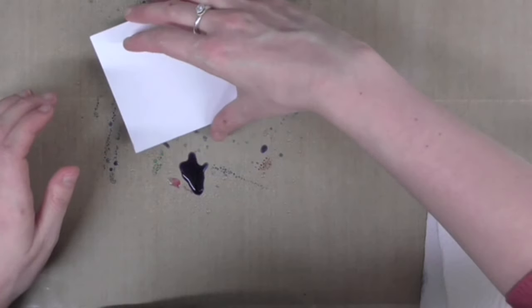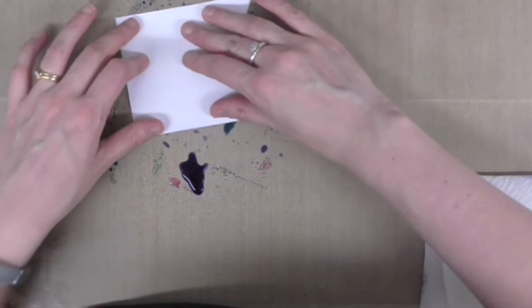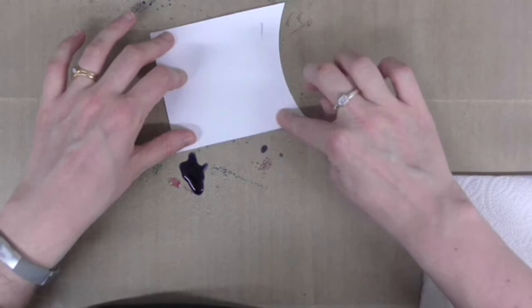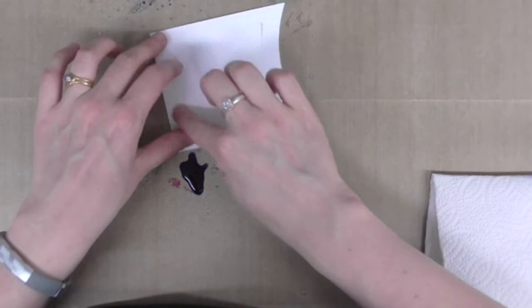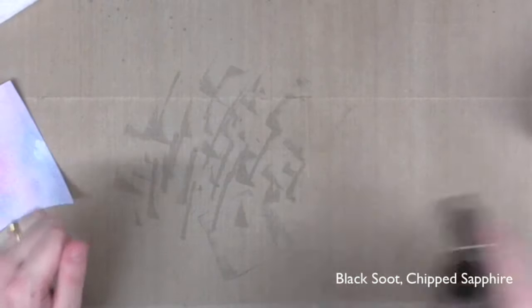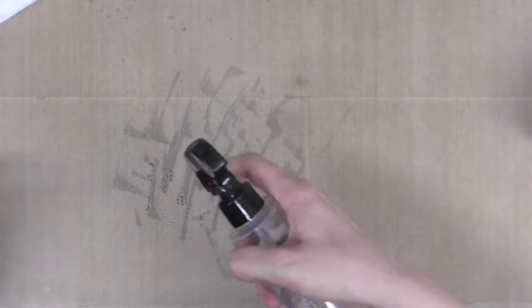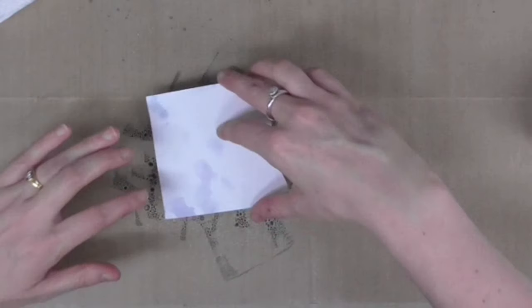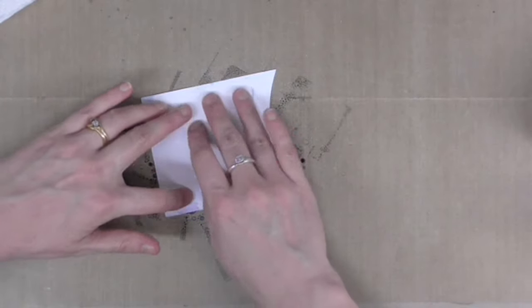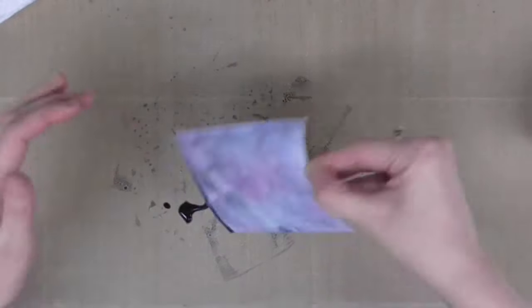I'm going to do that twice to start off with, drying the cardstock each time in between. Then I'm going to do the exact same procedure again but instead using some of the darker tones like Chipped Sapphire and Black Suit.